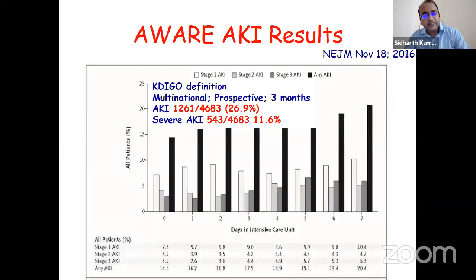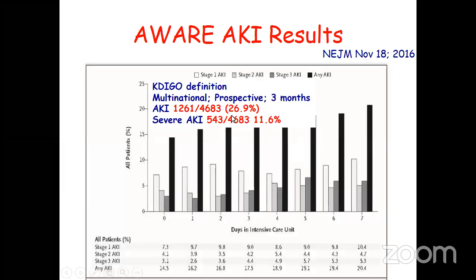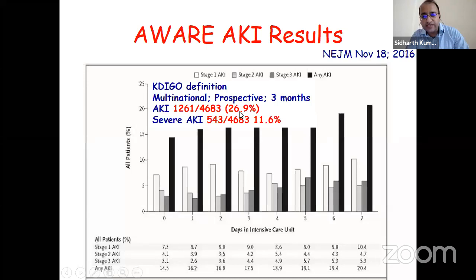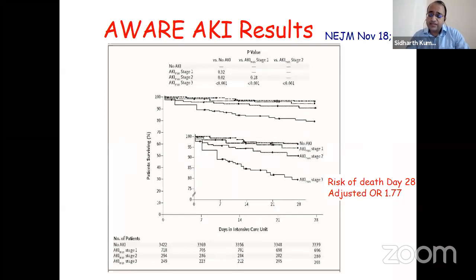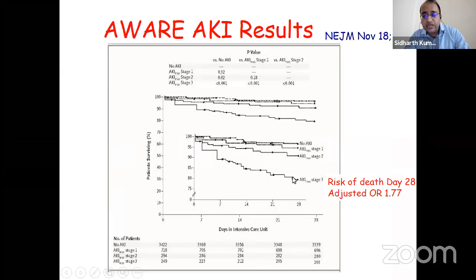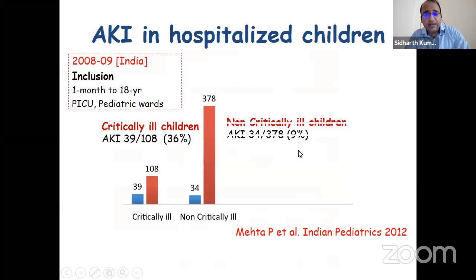The AWARE study—a landmark multinational prospective study using the KDIGO definition—showed an AKI incidence of 26% in children across all countries studied, with severe AKI around 11.6%. It beautifully demonstrated inter-stage discrimination: if a child gets AKI stage three, they are more likely to die compared to stage two or stage one. A study from AIIMS showed that even in non-critically ill children, almost 10% had AKI compared to critically sick children.